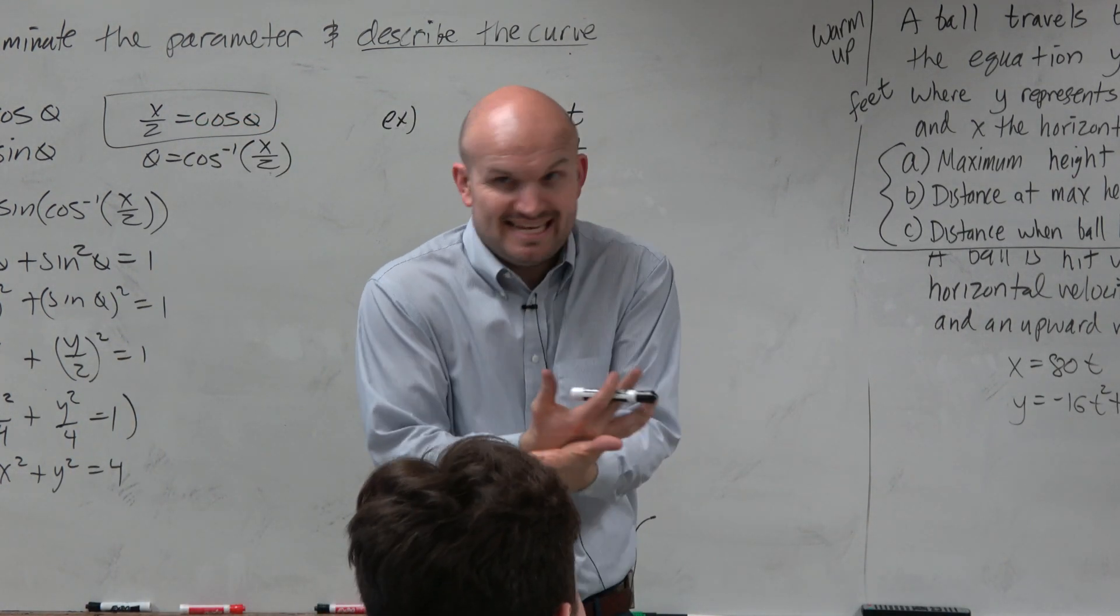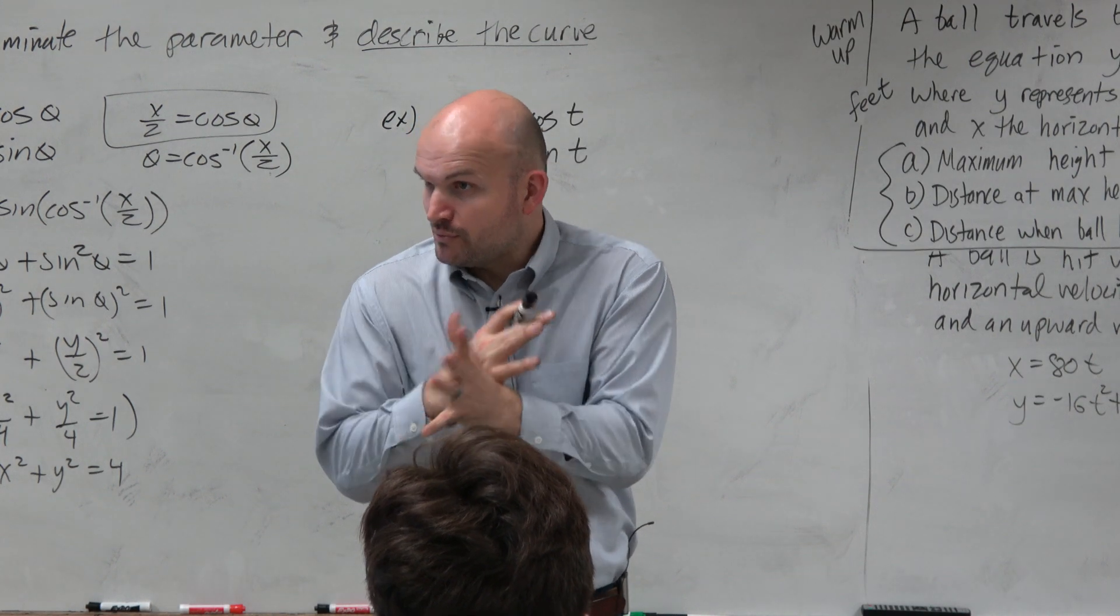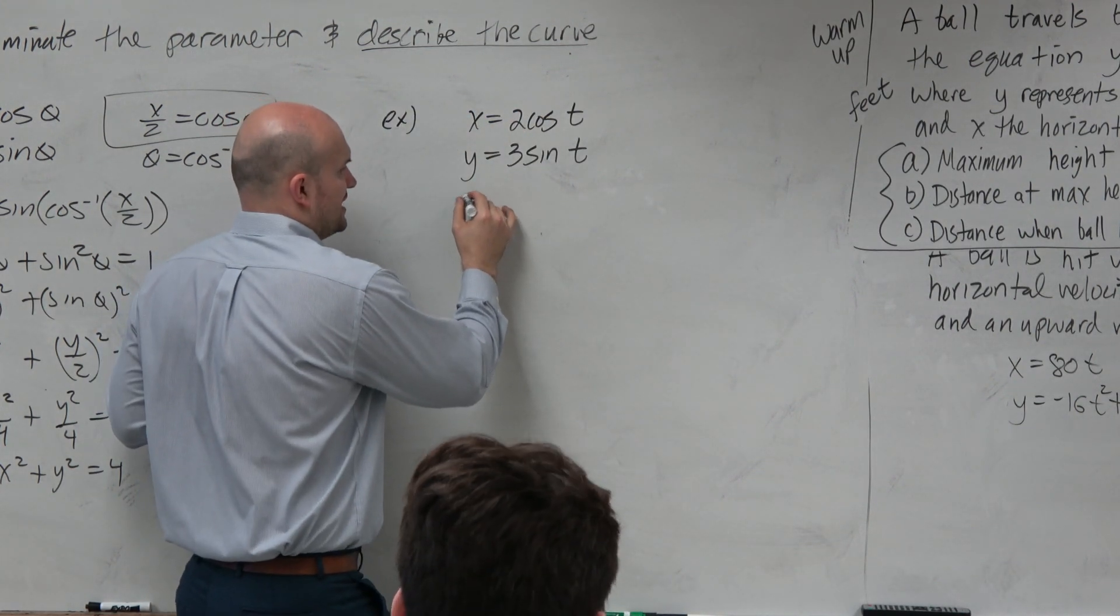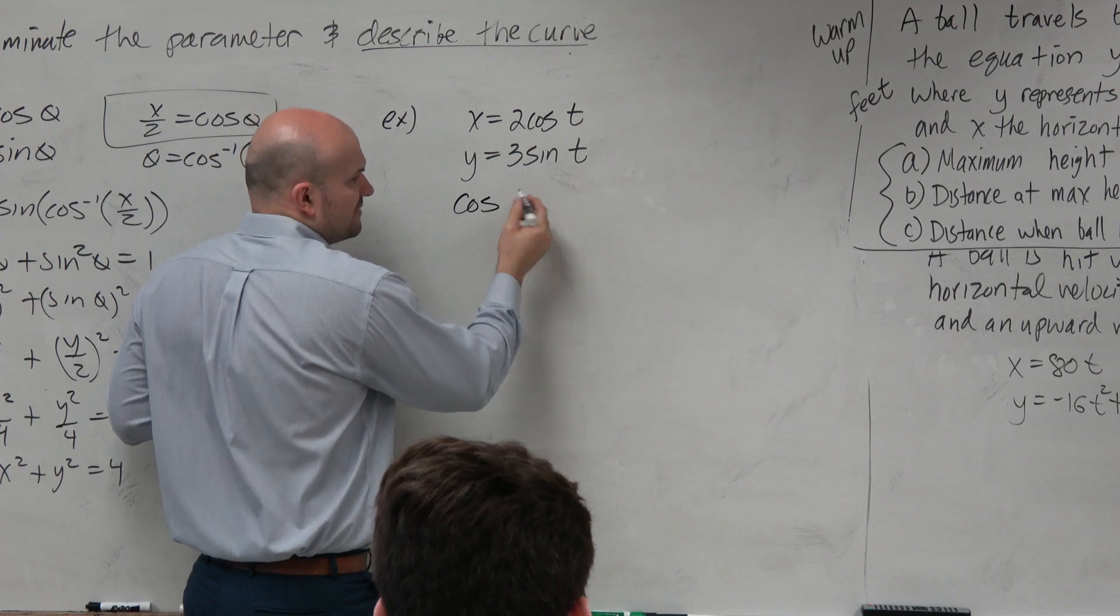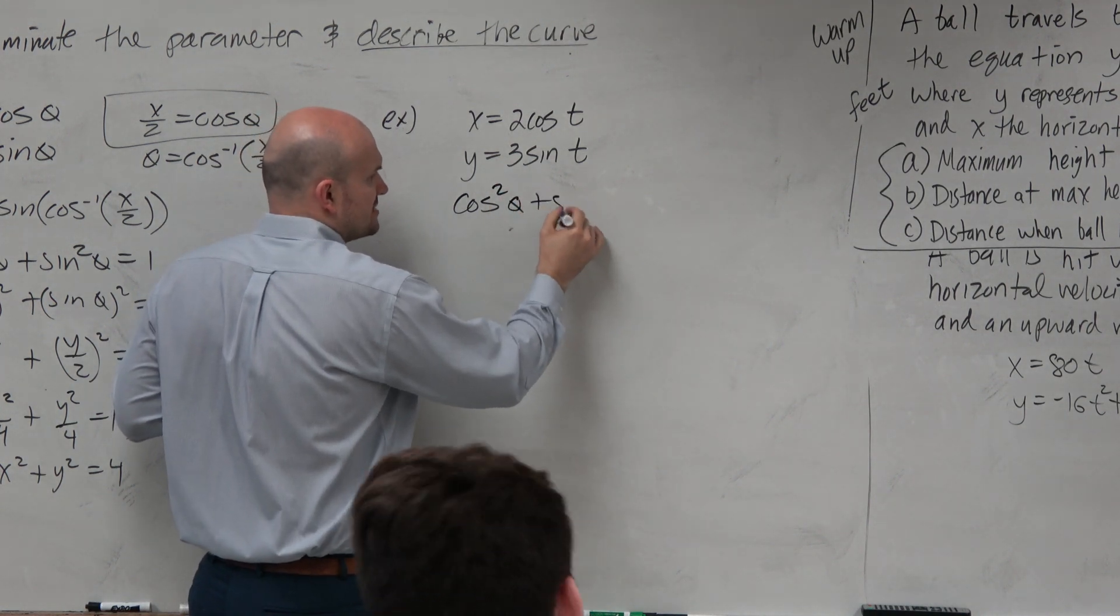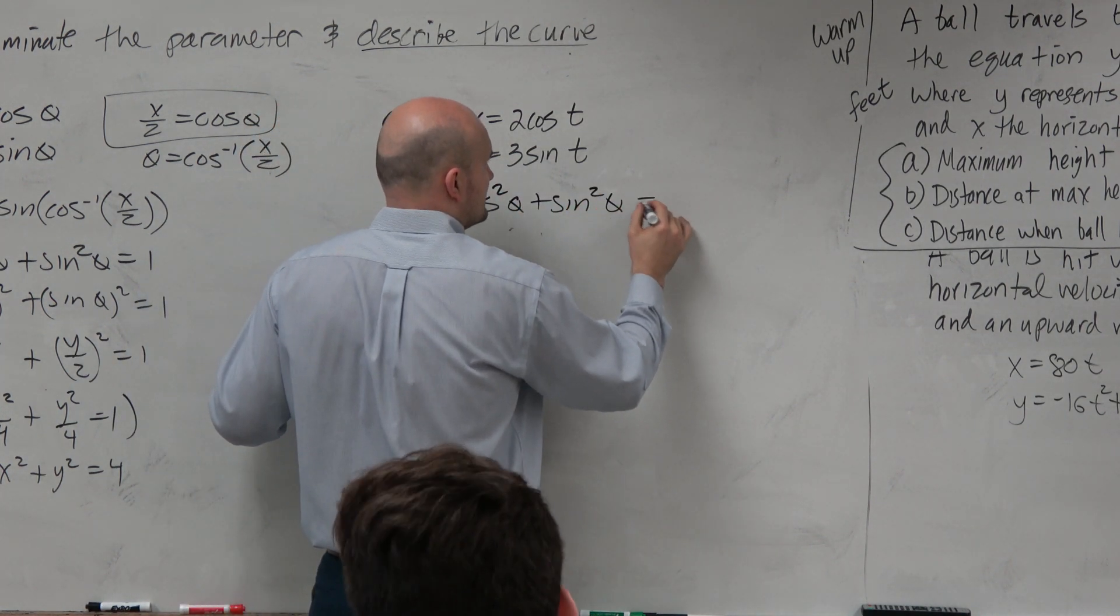We don't want to solve for t, right? That doesn't work for this one. We want to use our Pythagorean identity, which is cosine squared theta plus sine squared theta equals 1.